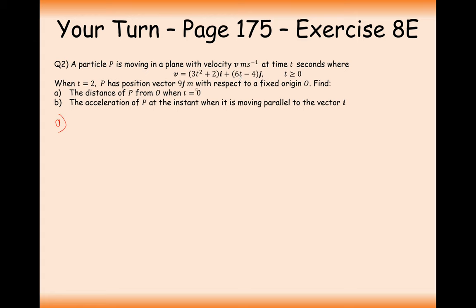Integrating gives (t cubed + 2t) for the i component and (3t squared minus 4t) for the j component, plus c as a vector. At t equals 2, the position vector is 9j. Substituting t equals 2: i component gives 8 plus 4, j component gives 12 minus 8. Moving everything to the other side, c equals minus 12i plus 5j.